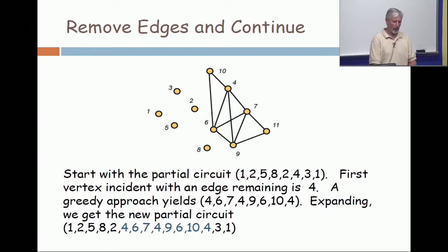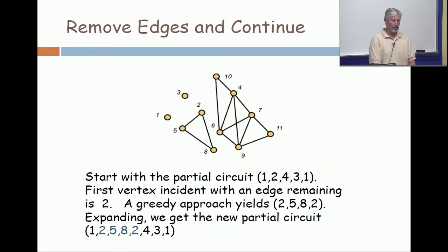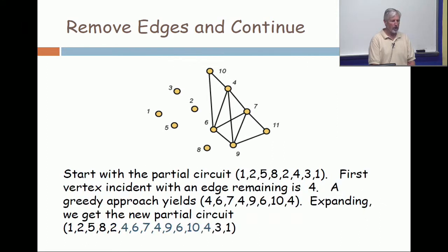Remove those edges from the graph. So, again, I want to watch the graph. This was the graph. You see the triangle, the two, five, eight, two triangle. Those edges are gone now. And now, we take the first vertex for which you can continue. All right. So, I have the partial circuit listed at the top of the slide, the one, two, five, eight, two, four, three, one. First vertex incident with an edge remaining is four.